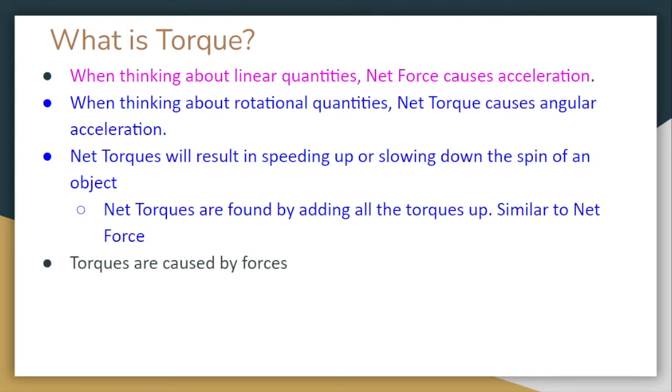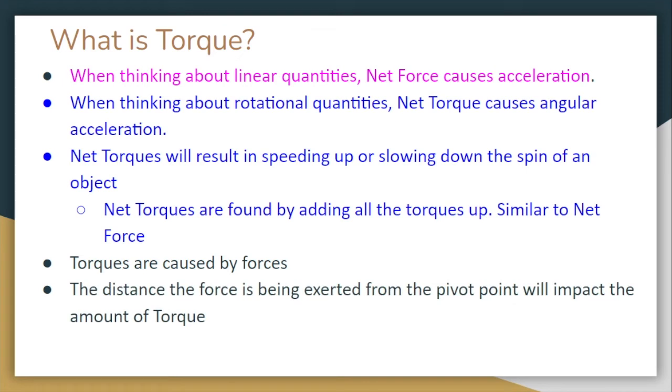Torques are actually caused by forces. So you can't have a torque unless you have a force. And the distance that force is being exerted from what we call the pivot point is going to impact the amount of that torque. And again, we'll take a deeper look into this when we look at the equation on the next few slides. Like we mentioned before, the units of torque are just Newton meters, which makes sense because we just said that torque depends on forces and it depends on distance. So maybe some of you are getting an idea on how we figure out torque.